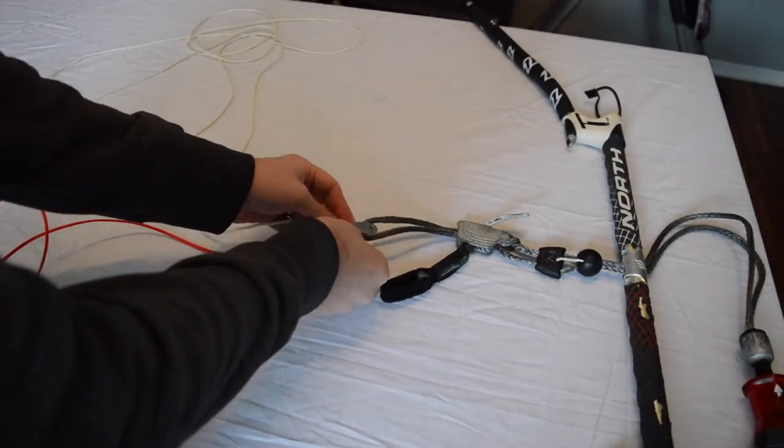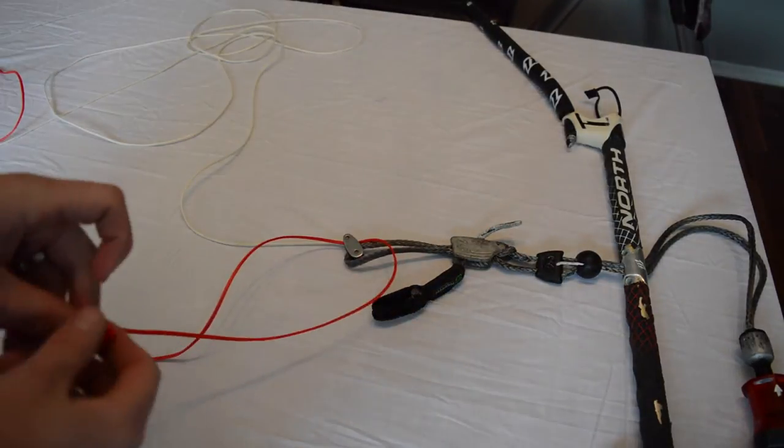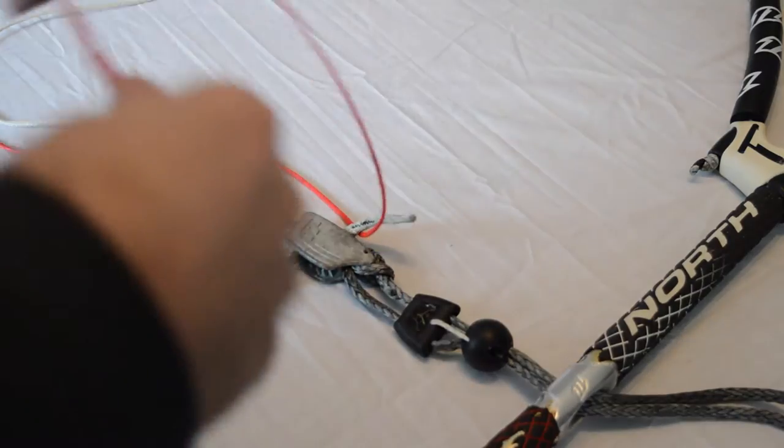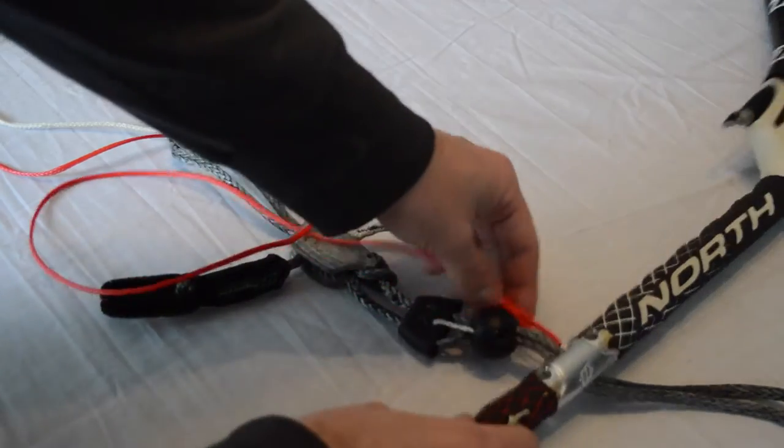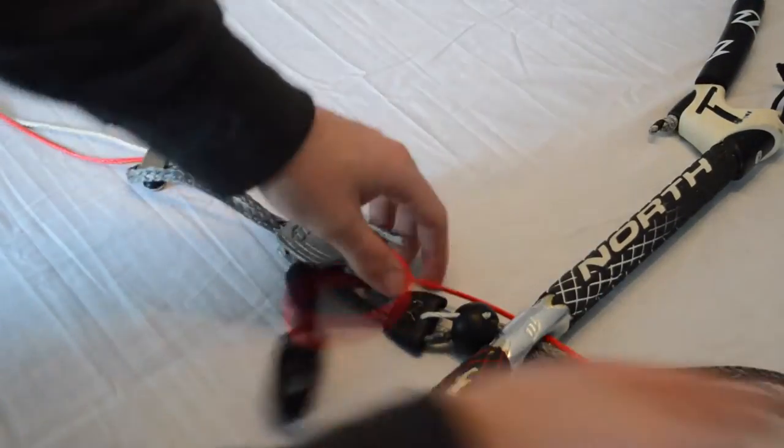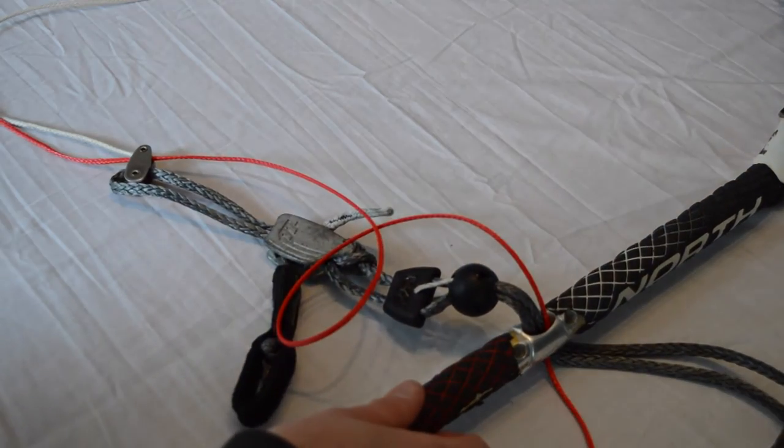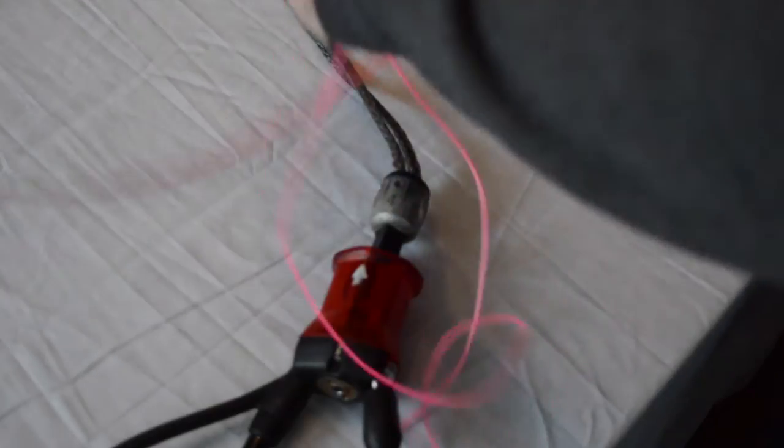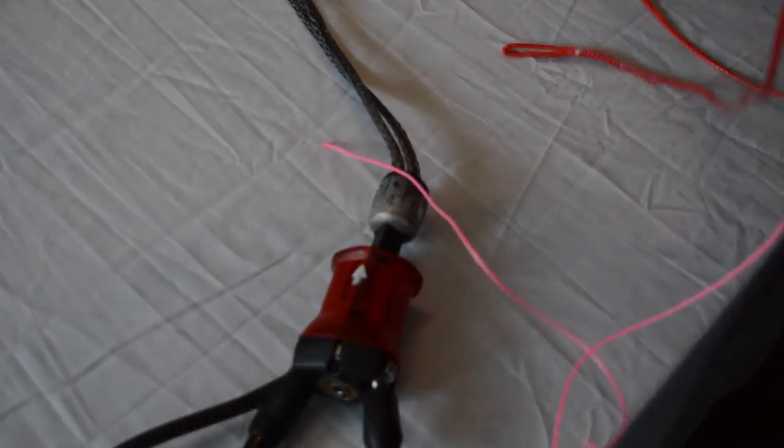So in this case, sometimes the safety line will run above your depower line through that pulley. In this case, I'm going to do it, but personally I don't really like to. I just like to leave it outside of the pulley. It's kind of personal preference. After that, you're going to run it down through the center of the bar. And then we have to run it through the chicken loop again.